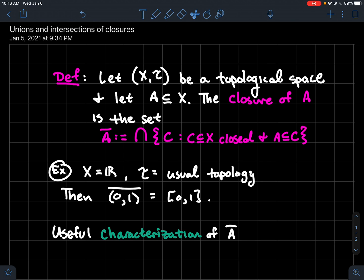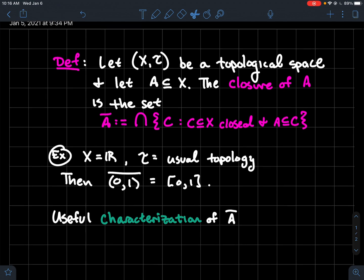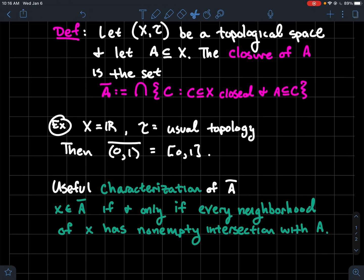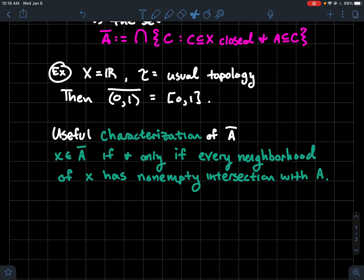To help us work with closures more, there's a useful characterization: x is an element of A-bar if and only if every neighborhood of x — meaning every element of the topology that contains x — has non-empty intersection with the set A.